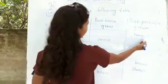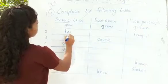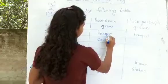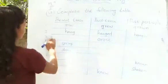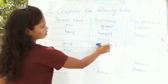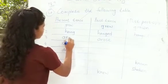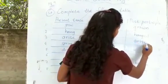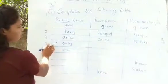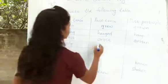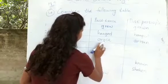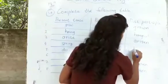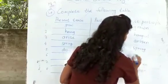Next, in your second, it is given hang. So in your present, it will be hang, hung, hung. Next, in your third, the word is given arose. So here, arise, arose, arisen. Next, in your fourth, it is given spring. Sprang, sprung.